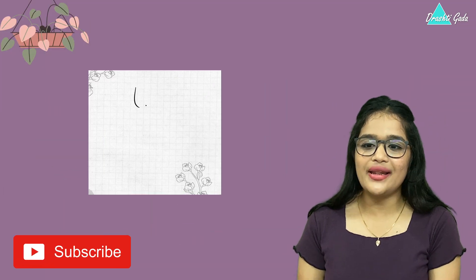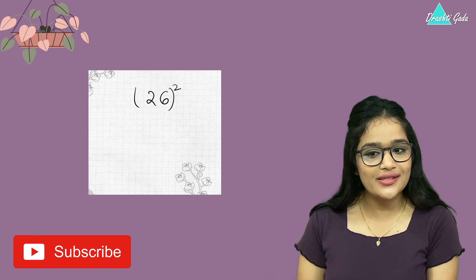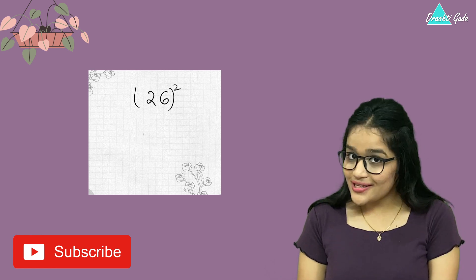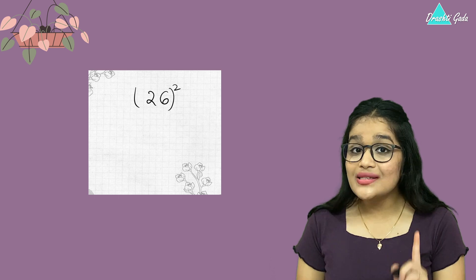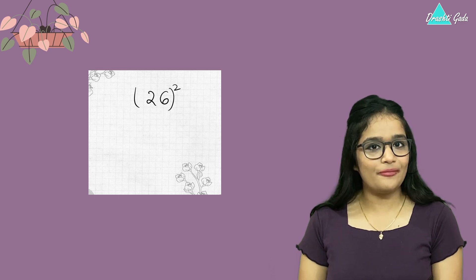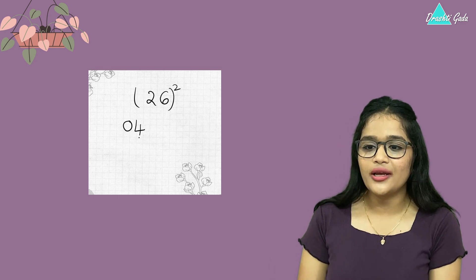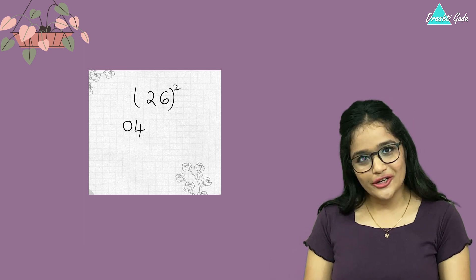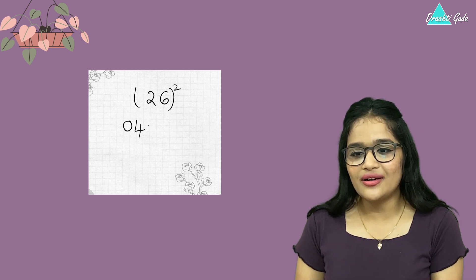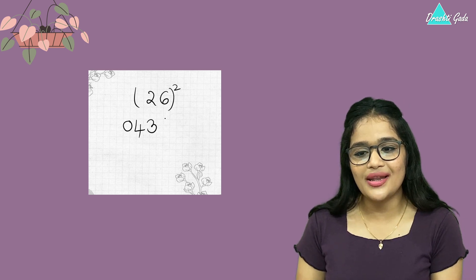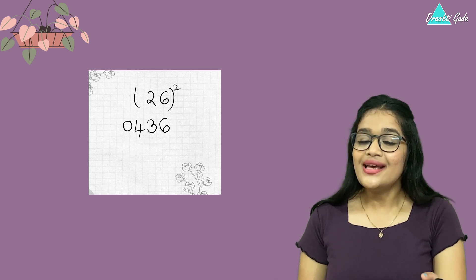Let's take another example: 26 squared. In the first step, we write the square of each digit. Two squared is 4, but we always express it in two-digit form, so we write 04. Then six squared is 36, so we write 36. Step one is done.